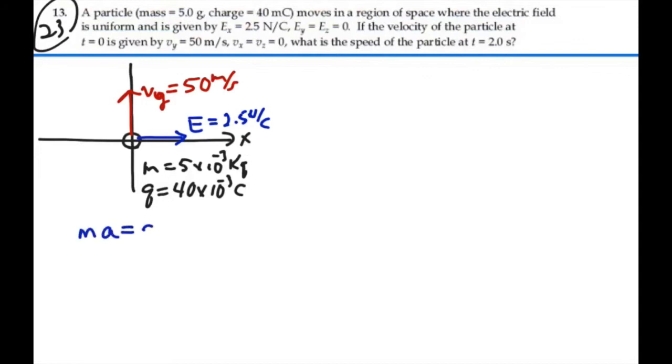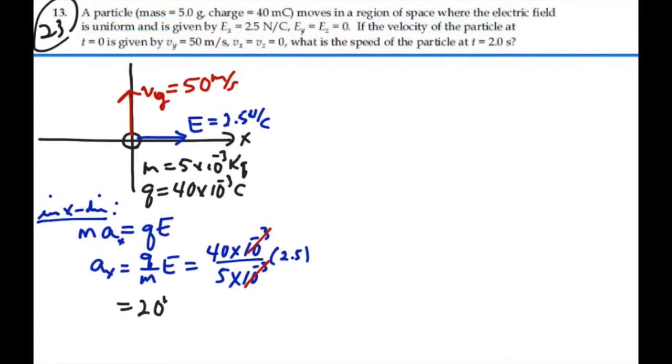mass times acceleration will equal QE. This is in the x direction. So the acceleration in the x direction will equal the charge to mass ratio times the electric field. So that is going to be 40 millicoulombs over 5 grams times the electric field, which is 2.5. The 10 to the minus 3s cancel out. And we're going to end up with 8 times 2.5, or 20 meters per second squared. So that's our acceleration in the x direction. We have no acceleration in the y direction.